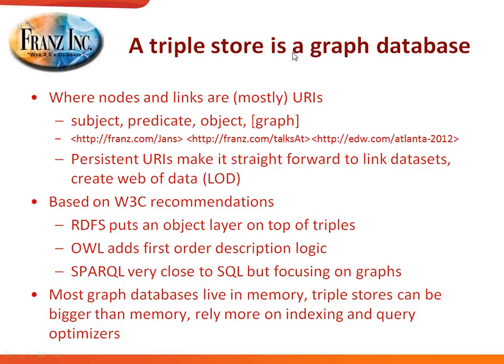Triple stores also have a whole body of standards from W3C: RDFS puts an object layer on top of the triples, OWL adds logic, and SPARQL is the query language. Another difference is that most graph databases live in memory — as soon as you exceed memory, performance drops sharply. Triple stores are more hybrid, with more time spent on query optimizers so you can get roughly relational database performance for certain aggregate queries.